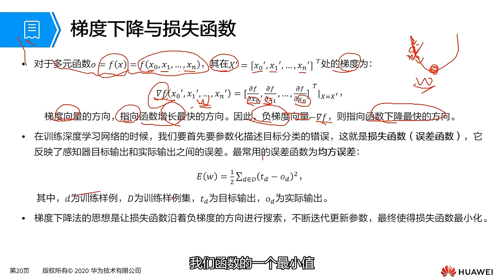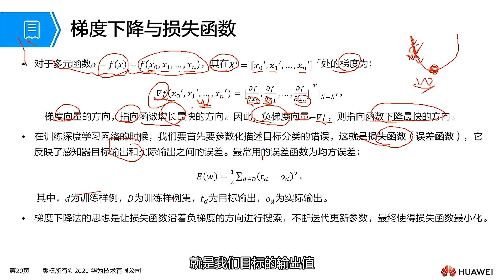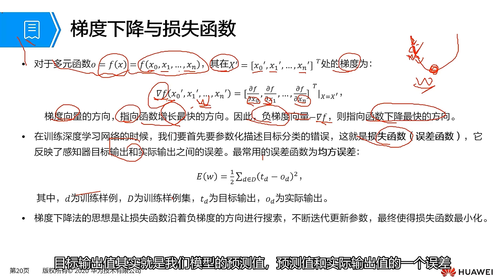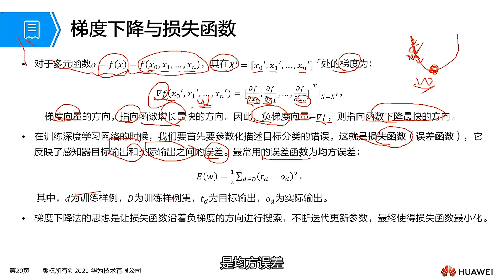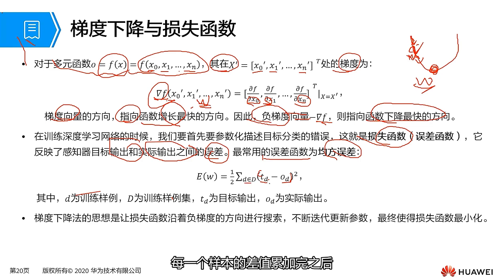The minimum value of our function is our loss function. This loss function describes the difference between the target output value — the predicted value of our model — and the actual output value. A common error function is the mean square error, which is the square of the difference between the actual output and the predicted value, summed over each sample, then multiplied by one half to facilitate computation of partial derivatives.